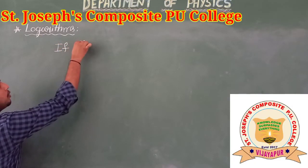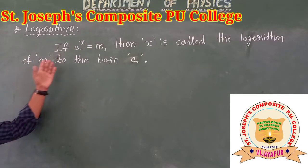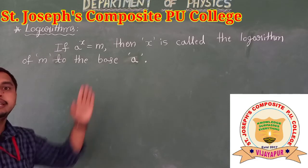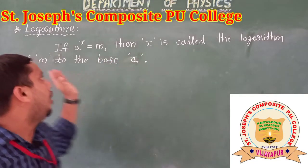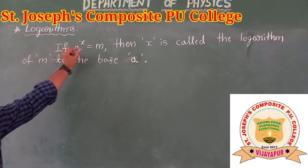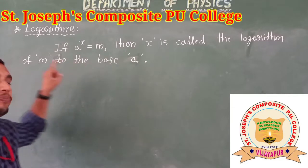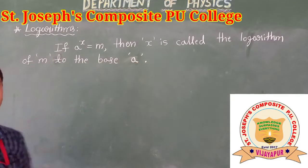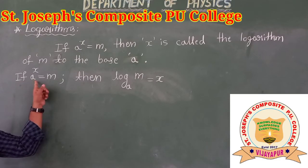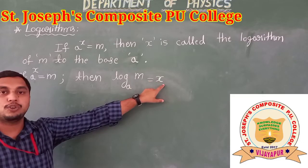If a to the power of x is equals to m, then x is called the logarithm of m to the base a. Mathematically, we can write it as: if a to the power of x is equals to m, then log m to the base a is equals to x.